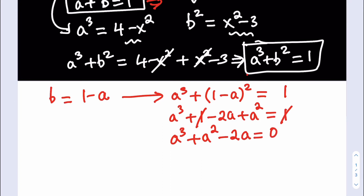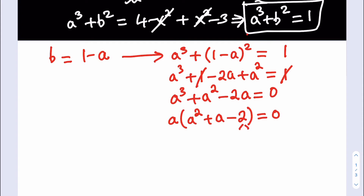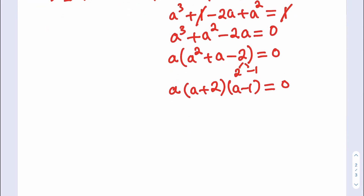Even though this is a cubic equation, it's factorable. We take out a factor of a to get a times (a squared plus a minus 2) equals 0. The quadratic is also factorable — we need two numbers whose product is negative 2 and sum is 1, which are 2 and negative 1. So we factor as a times (a plus 2) times (a minus 1) equals 0, giving three solutions: a equals 0, a equals negative 2, and a equals 1.